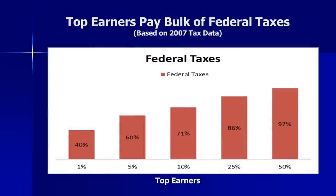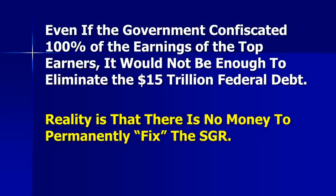The answer some provide is that we need to tax people more, particularly higher earners, to pay their fair share. But if you look at the actual numbers, the top 50% of earners already pay about 97% of federal taxes, the bottom 50% only pay about 3%, and nearly one-third pay no tax at all. The reality is that even if the government confiscated 100% of the earnings of the top earners, it would not be enough to eliminate the $15 trillion budget deficit.